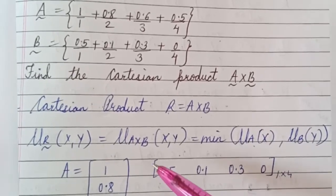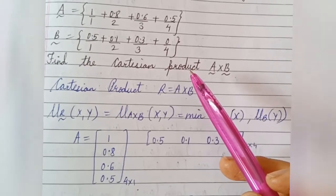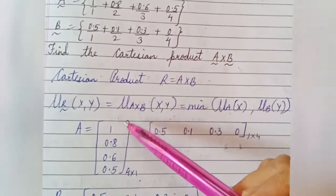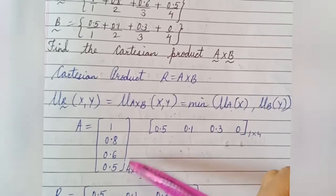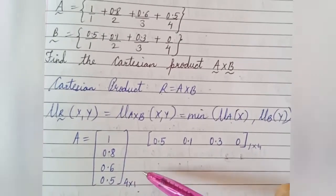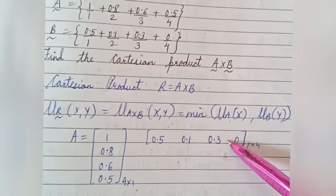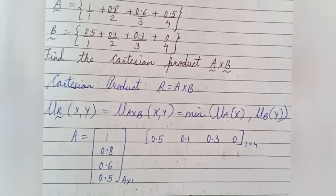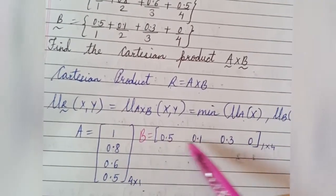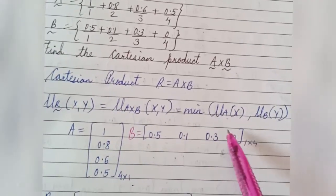Fuzzy set A can be written as a column vector of size 4×1, and fuzzy set B can be written as a row vector of size 1×4. This is set A and this is set B, written in matrix form.